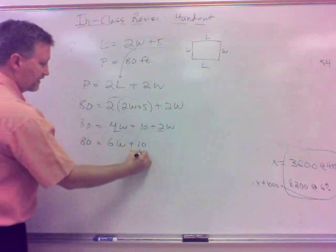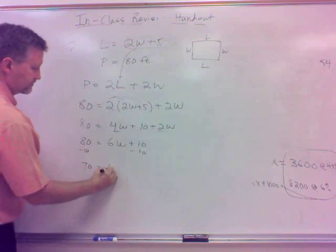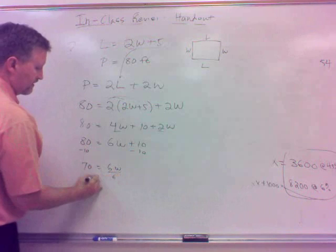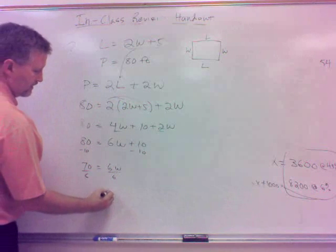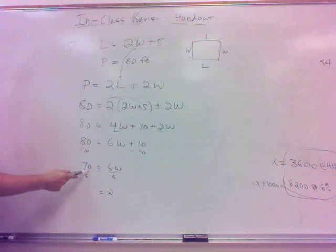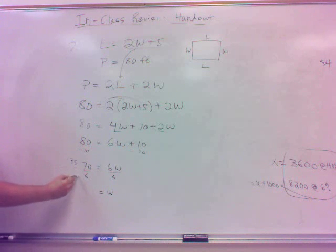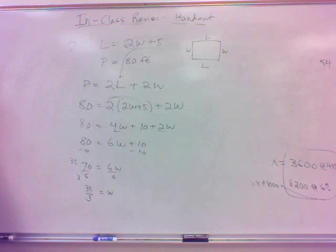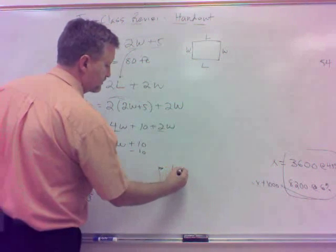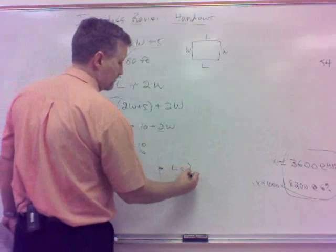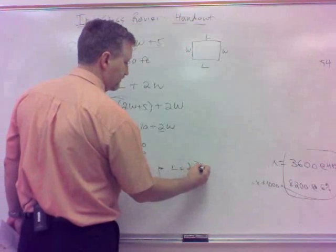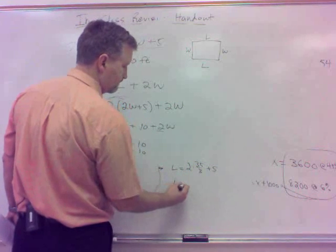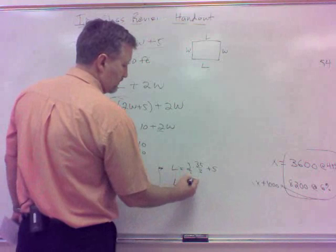So yeah, that's just distribute, right? 4W plus 2 times 5 would be 10, plus 2W. So that's 80 equals 6W plus 10. Subtract the 10, and that's 70 equals 6W, divide by 6, and that does reduce, that's not a nice one, but reduces by 2, 35 thirds. Which is, yeah, 35 thirds, let's just say that.